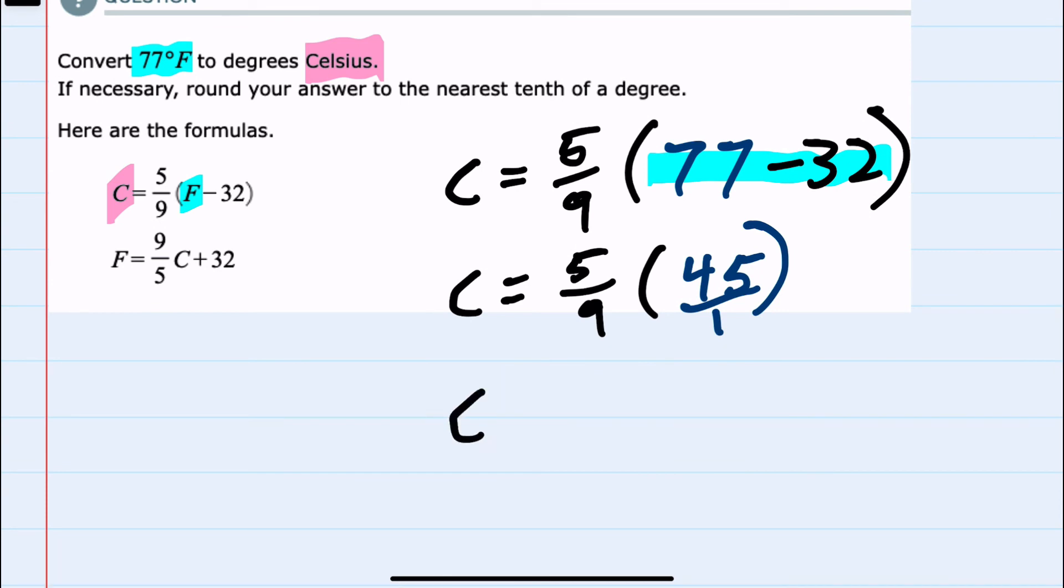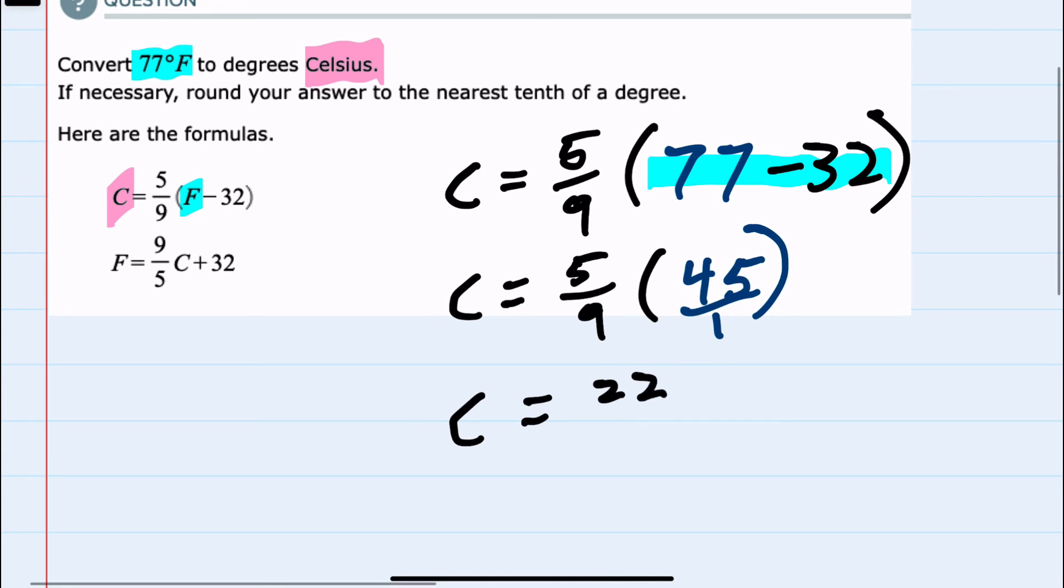And in the numerator, we would have 5 times 45, which is 225, and in the denominator, 9 times 1 is 9.